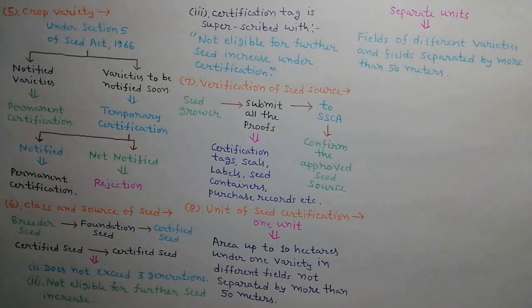For the purpose of seed certification, the entire area sown by a seed grower up to 10 hectares under one variety in different fields not separated by more than 50 meters shall constitute one unit. The fields of different varieties and fields separated by more than 50 meters shall be regarded as separate units for the purpose of field inspection.